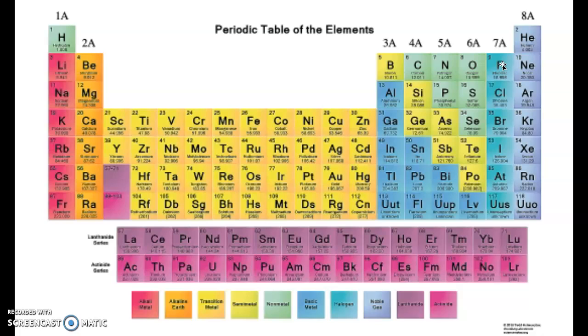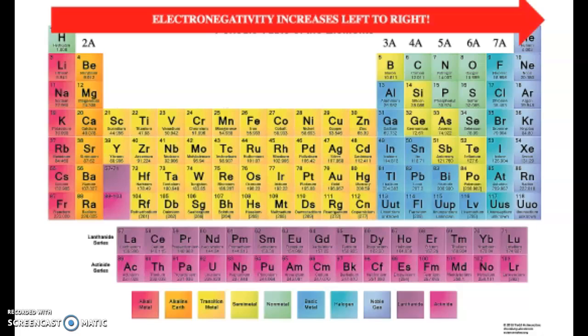This already gives us a clue. The left side of the periodic table wants to lose electrons, while the right side wants to gain electrons. This concept is called electronegativity. Electronegativity means how much an atom wants an electron.